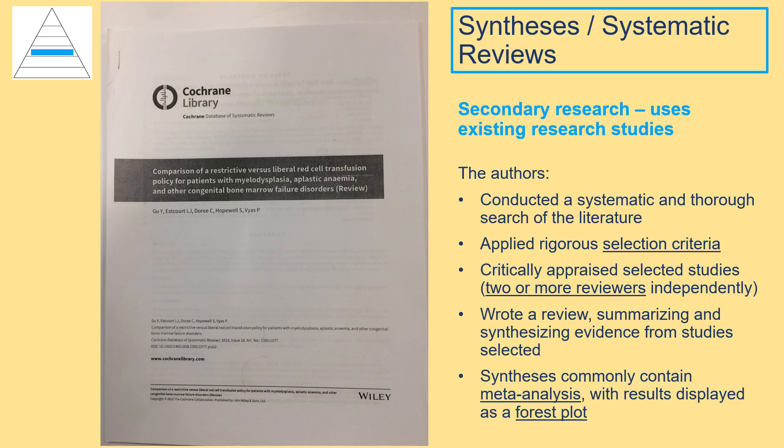Next, they will conduct a systematic and thorough search of the databases that have been identified as relevant for their research question. Two or more reviewers will independently screen the results, first examining the titles and abstracts to quickly eliminate non-relevant studies. They will then go through the remaining studies applying the selection criteria. The review will summarize and synthesize evidence from the selected studies, provide practice recommendations if there is enough high quality evidence, or point out areas that require further research to strengthen the evidence.